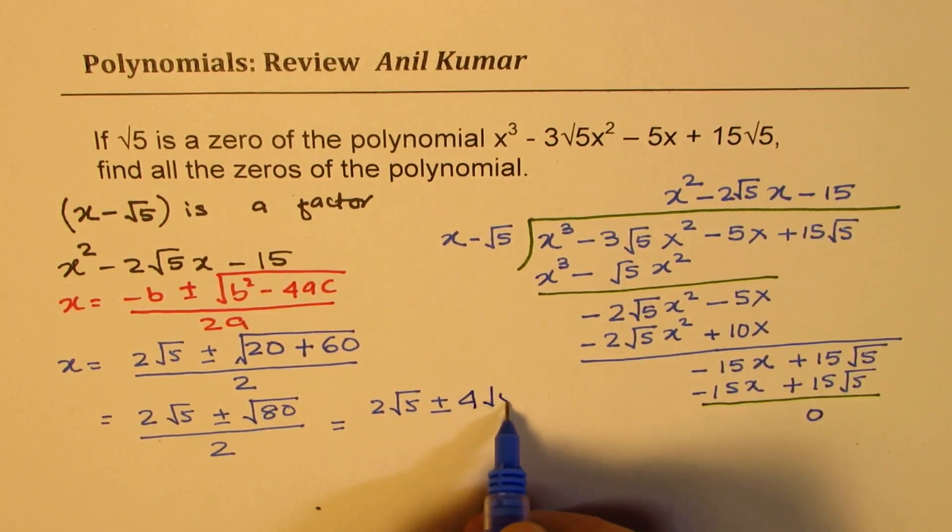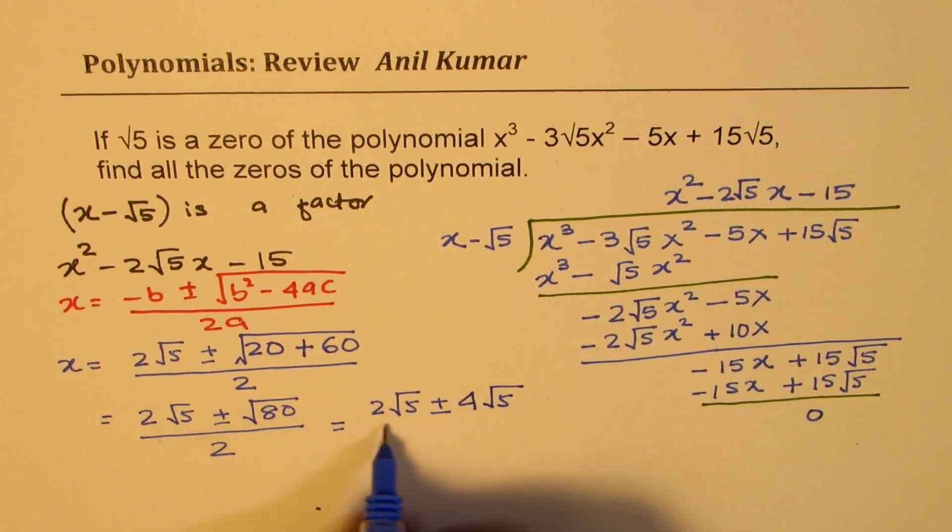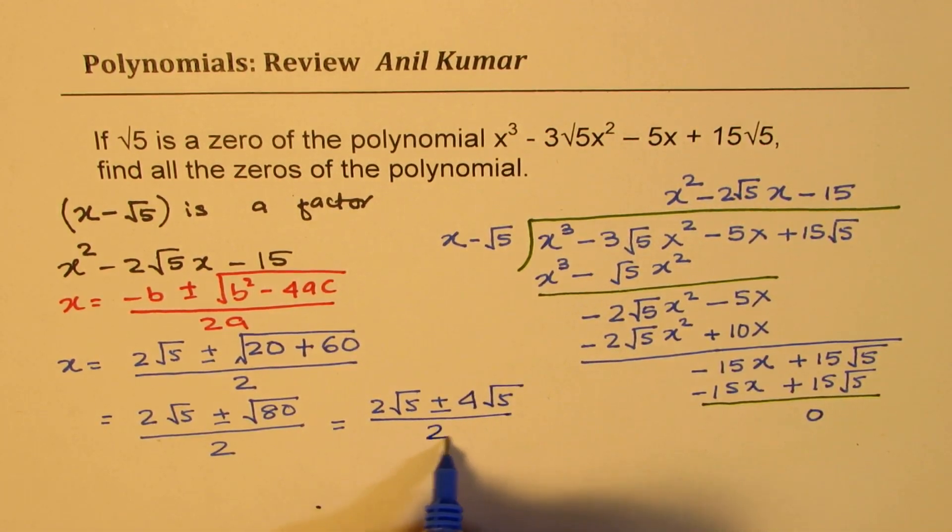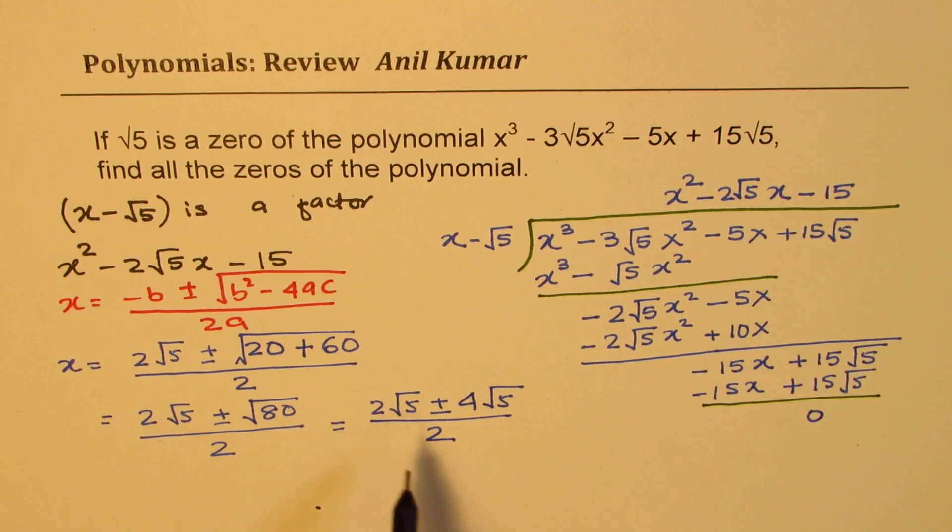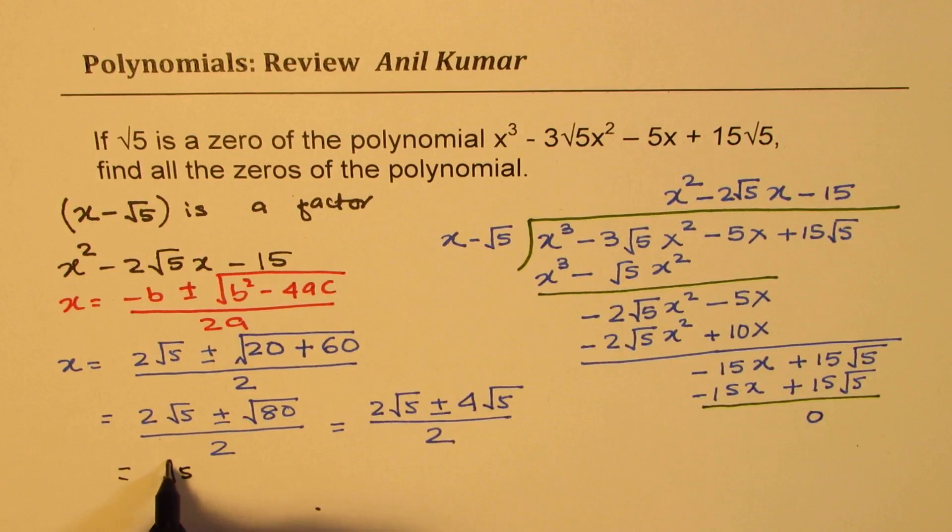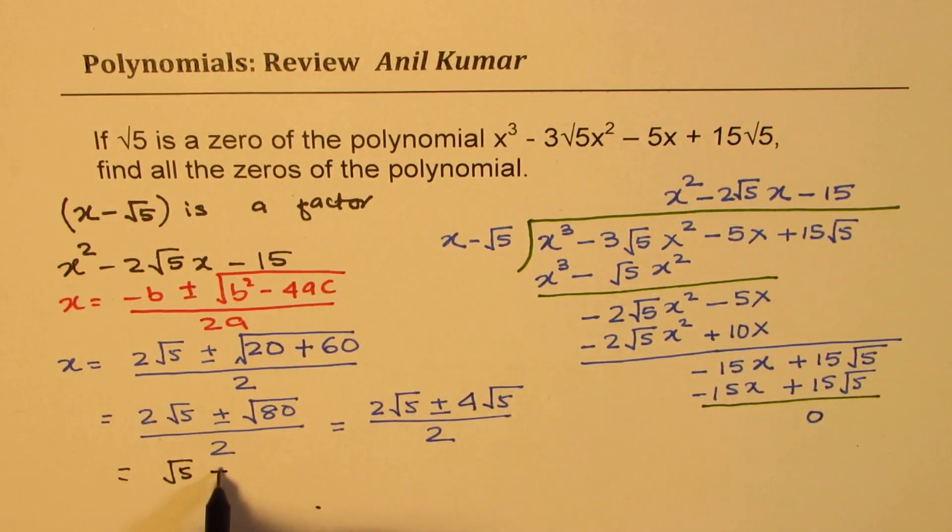You can do it in steps. Divided by 2. So that gives us, when you divide these by 2, you get square root 5 plus minus 2 square root 5.